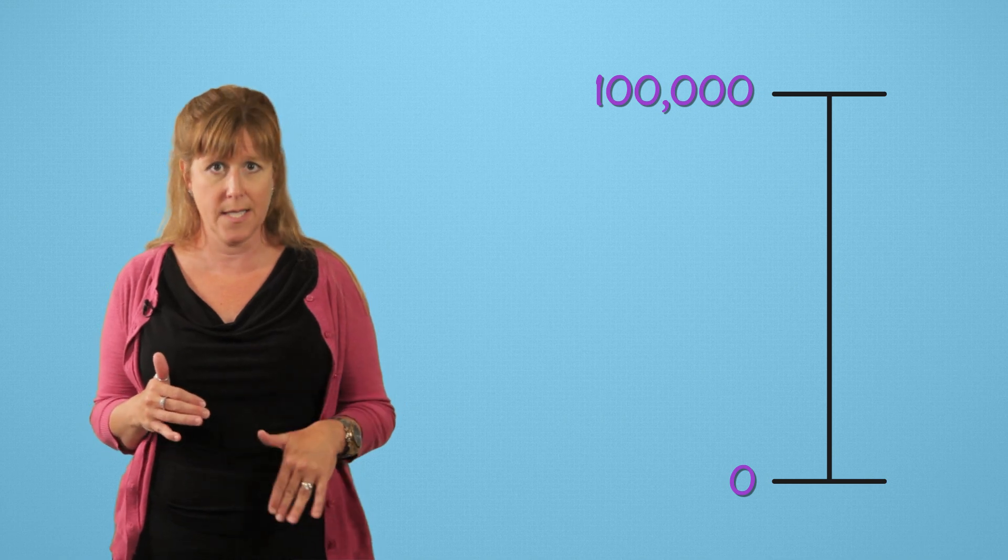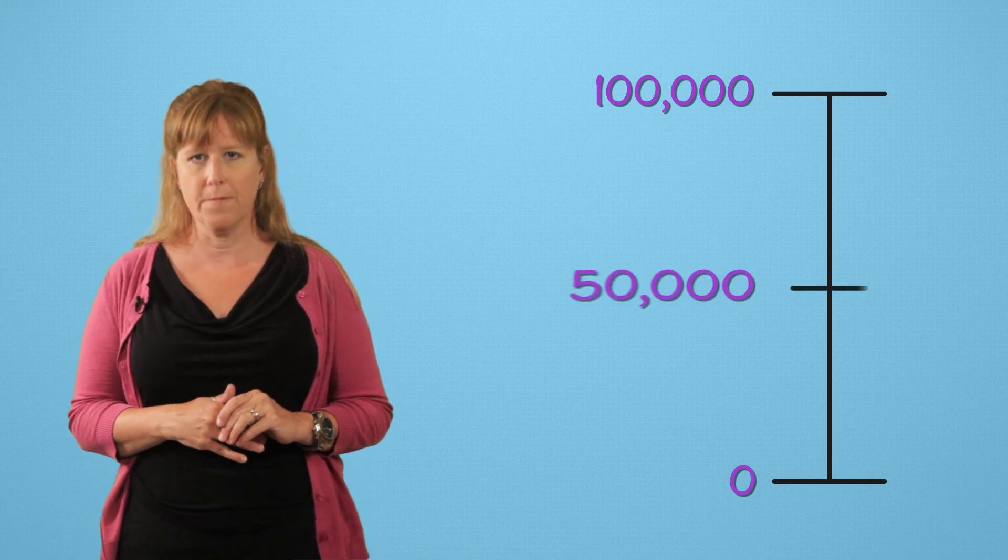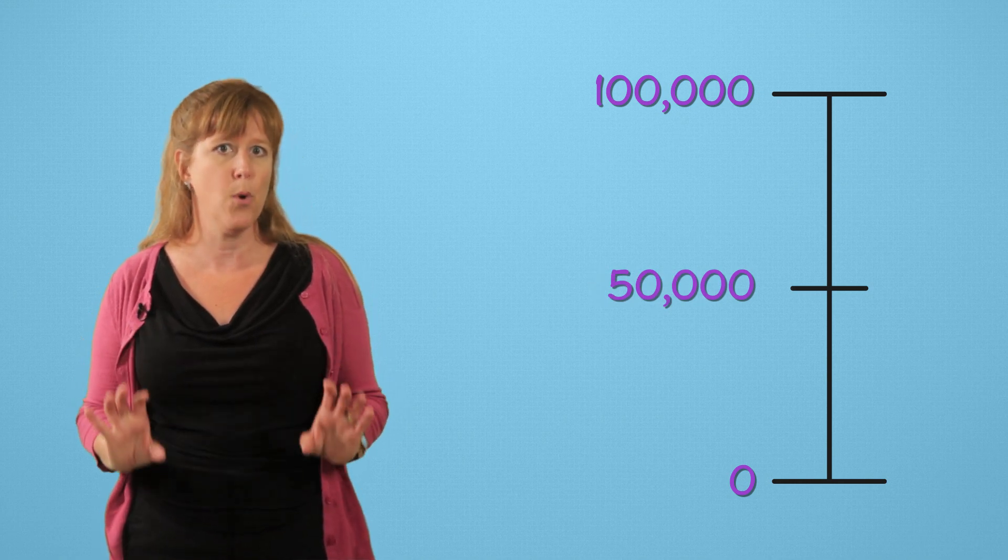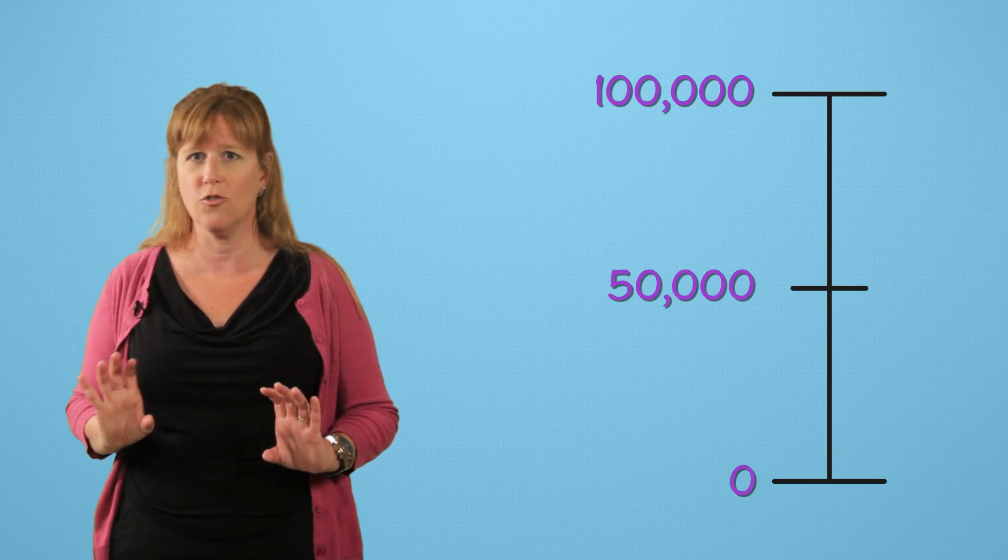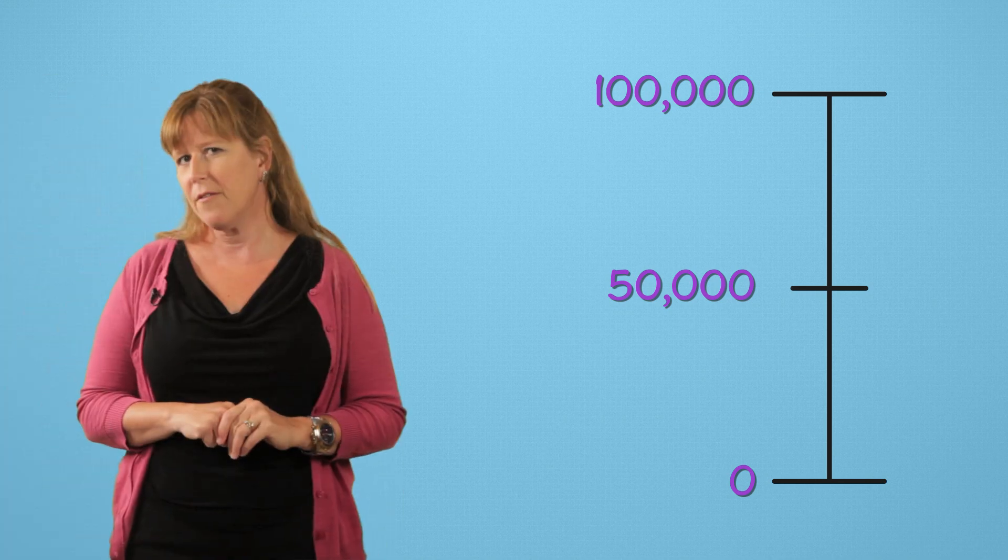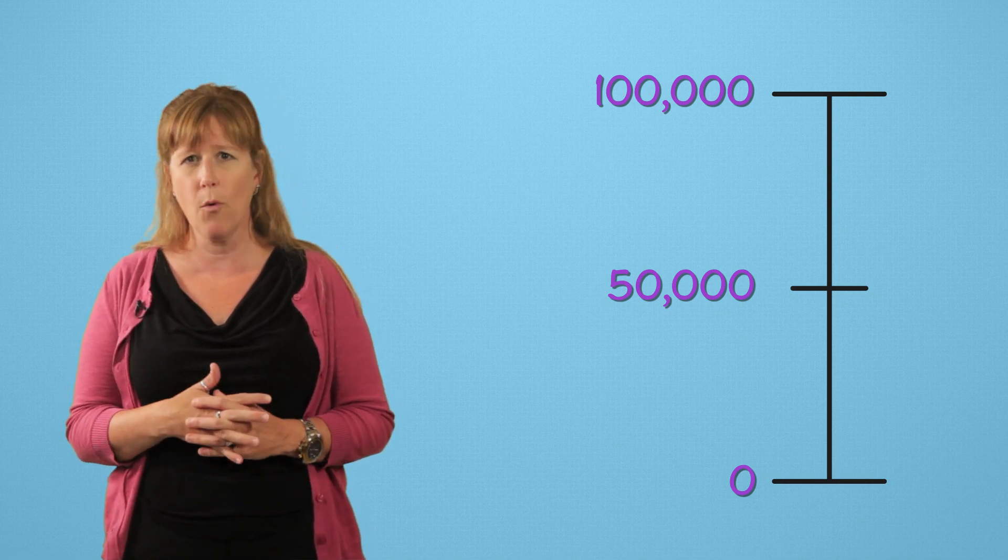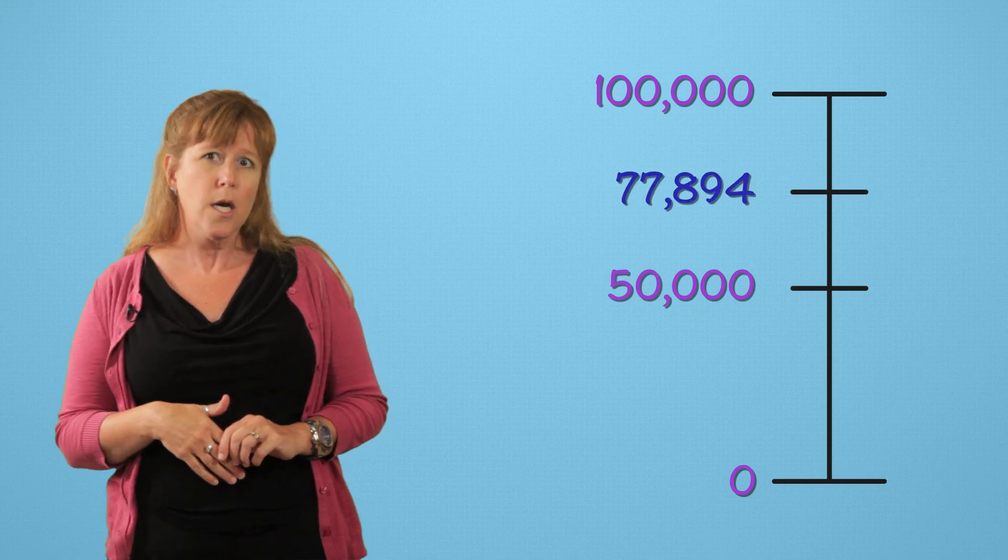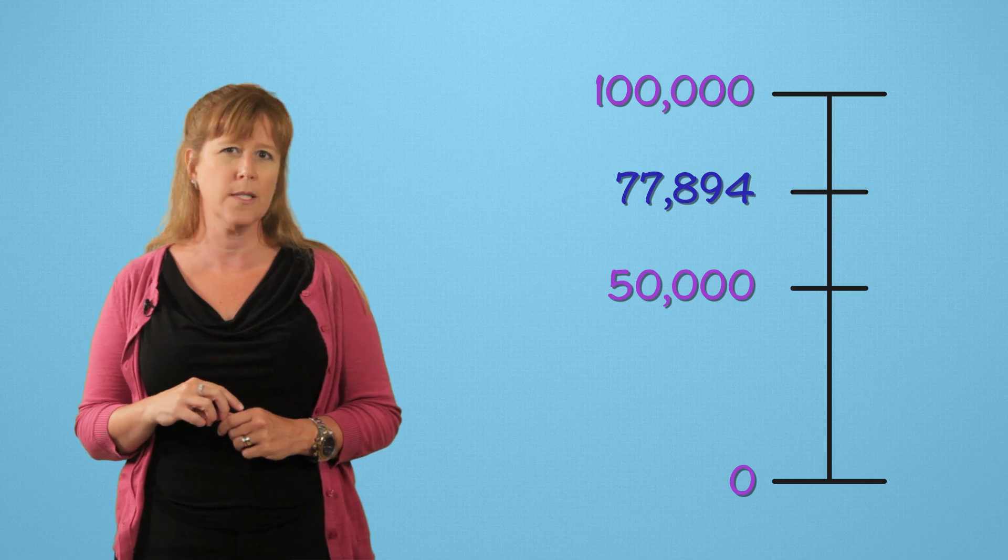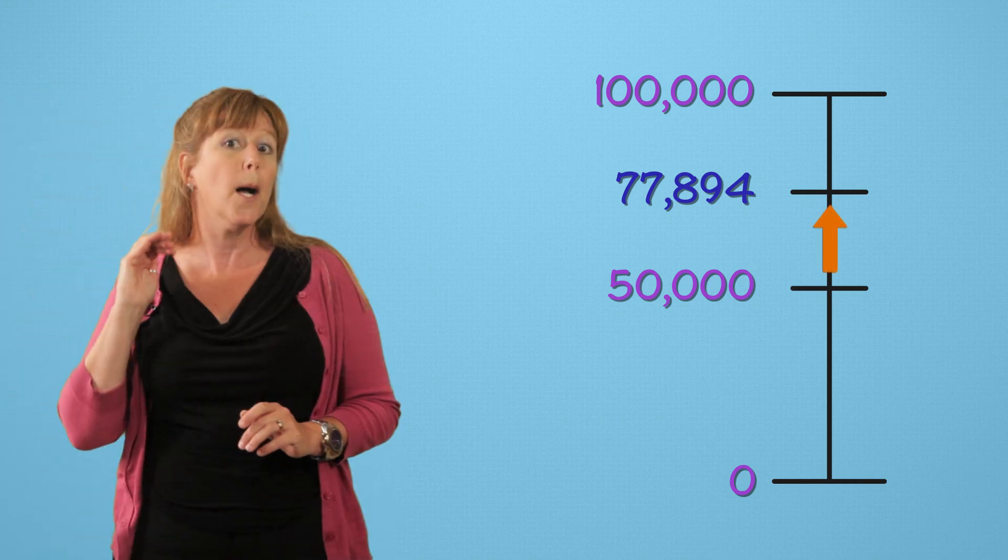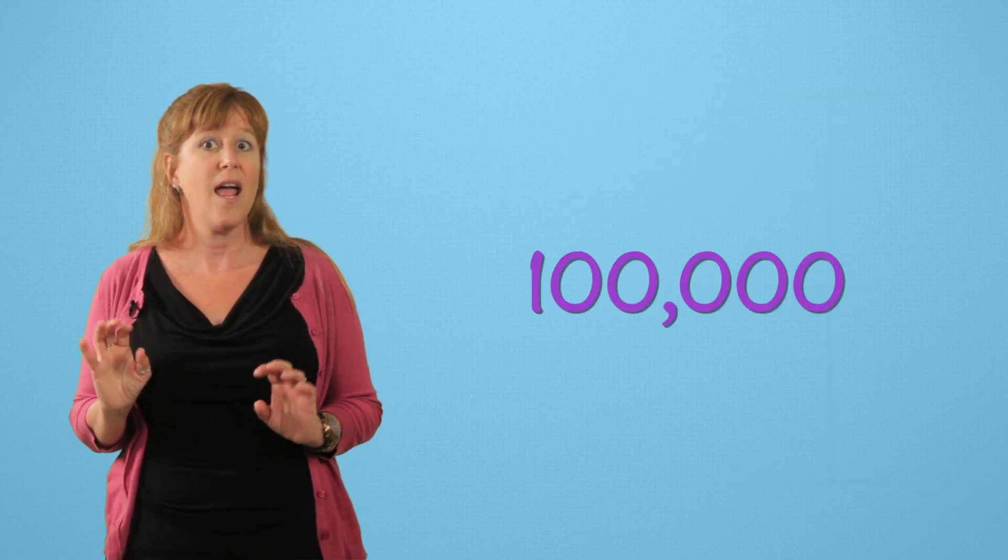What is the midpoint of zero and one hundred-thousand? Right in the middle is 50,000. Now we're ready to plot our point. About where should we put the 77,894? If this is 50,000, I think 77,894 will be right about here. So what is 77,894 rounded to the nearest hundred-thousand? We're above the midpoint, so we go up to the top number. And there you have it.